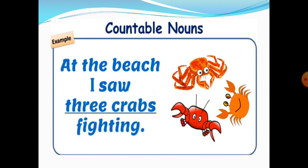Now let's see the third example. At the beach, I saw three crabs fighting. Here you can count the number of crabs — one, two, three. So the noun crab is countable. Crabs are countable nouns.